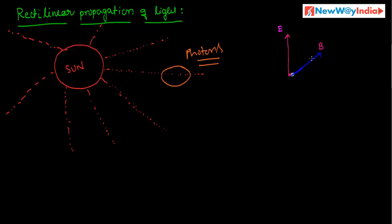These two fields — the electric field and the magnetic field — are perpendicular to each other, at right angles. Because of the interaction between these two fields, the photon moves mutually at right angles to each field. This is the direction of the photon.